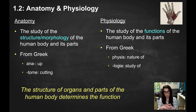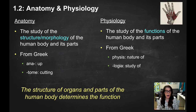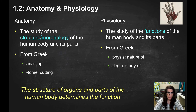Anatomy and physiology go together — the structure of a body part dictates its function. For example, if the stomach wasn't a hollow, stretchy, muscular organ, it wouldn't be any good at doing the stage of digestion that it does, where it churns things around, holds the acid, and breaks down food after the mechanical digestion and saliva work in the mouth.